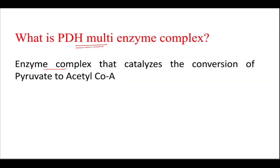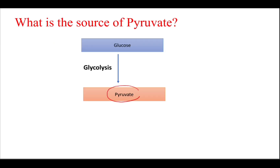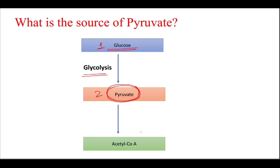To define, it is an enzyme complex that catalyzes the conversion of pyruvate to acetyl-CoA. Pyruvate is the end product of glycolysis, so glucose undergoes breakdown to form pyruvate. From one glucose, there is formation of two molecules of pyruvate. This pyruvate is then converted to acetyl-CoA in the presence of this enzyme called the PDH multi-enzyme complex.